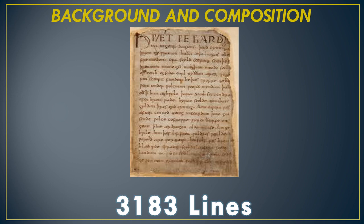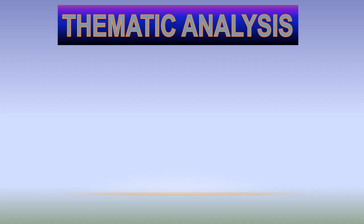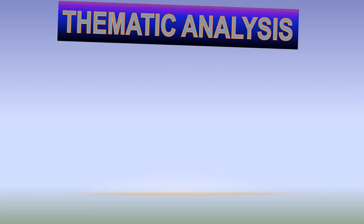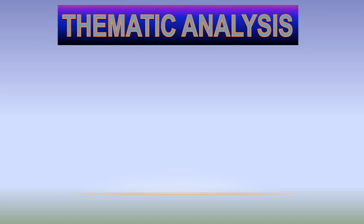This is a poem of 3183 lines and it deals with the Scandinavian theme — there is hardly any word mentioned about England. It was first published at Copenhagen in 1850. The theme, character, and setting of the poem are all Scandinavian. Now we will discuss the thematic analysis of this poem.